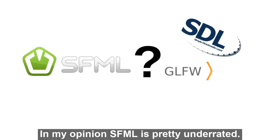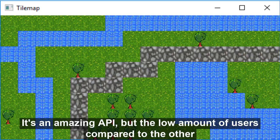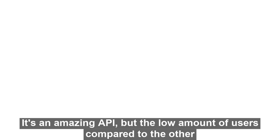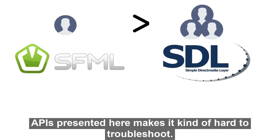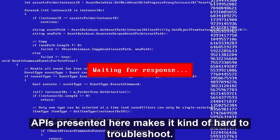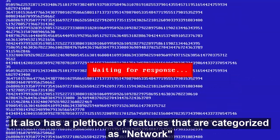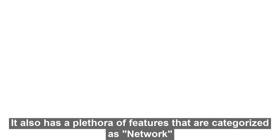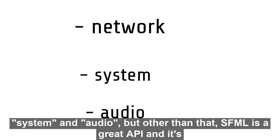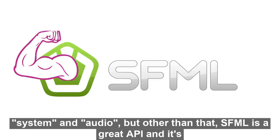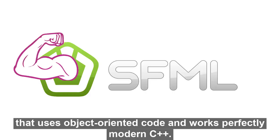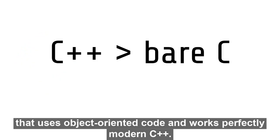In my opinion, SFML is pretty underrated. It's an amazing API, but the low amount of users compared to the other APIs presented here makes it kind of hard to troubleshoot if you run into trouble. It also has a plethora of features categorized as network, system, and audio. SFML is a great API and is actually the only API on this list that uses object-oriented code and works perfectly with modern C++.